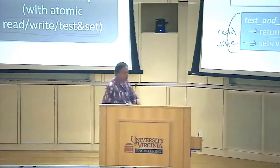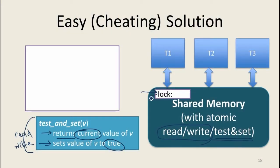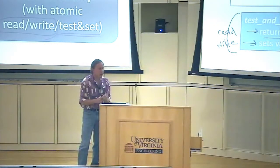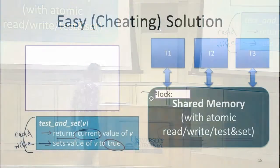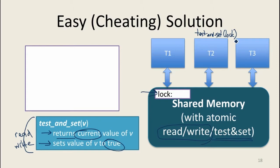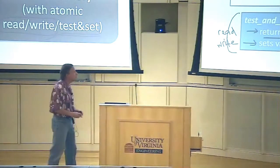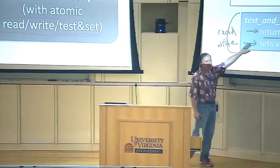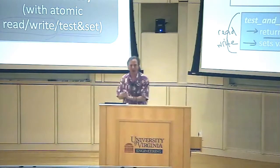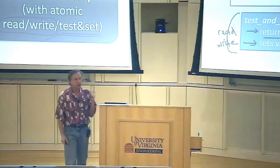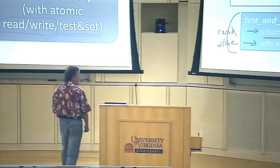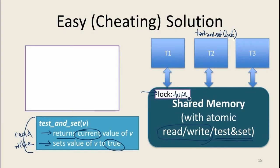We're going to use test-and-set with a lock. If the lock is true, it means some thread has the lock and others can't enter the critical section. If the lock is false, you can enter. Suppose thread two calls test-and-set while thread one already has the lock. Test-and-set returns the current value and sets the value to true. So if thread one has the lock, that means the lock is true, and test-and-set is going to return true. This is why we use ones and zeros — because true is too hard to spell.